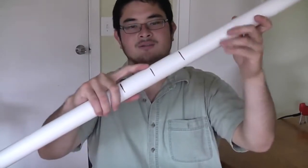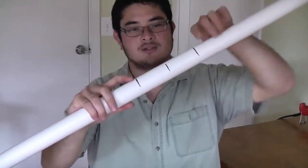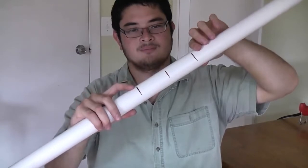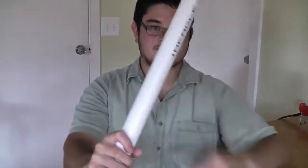And then what you want to do is mark the center and then mark 3 inches on either side of the center. Alright, so that's your PVC pipe.